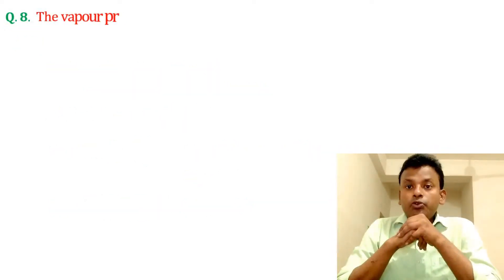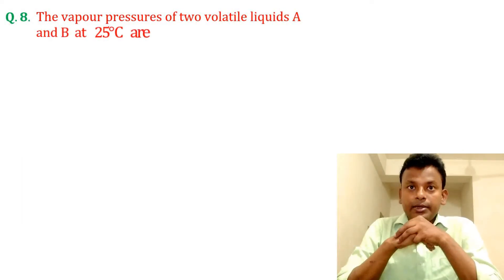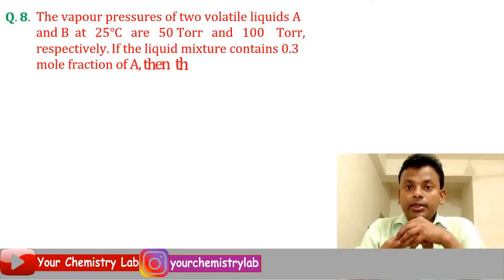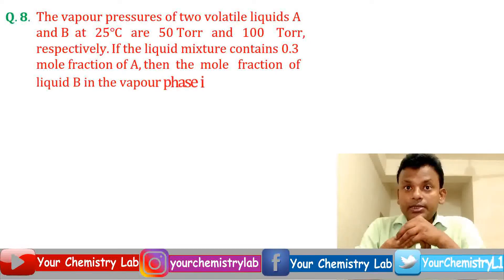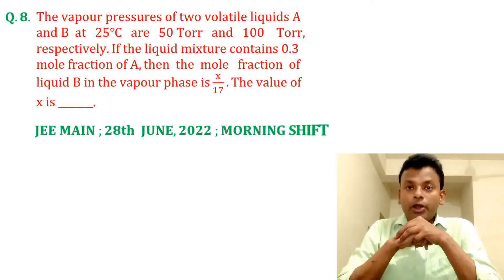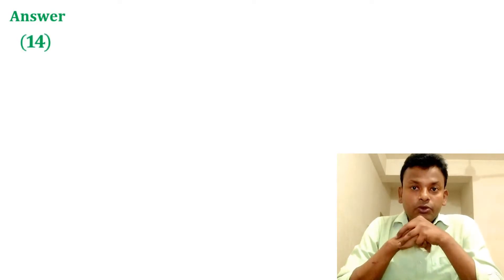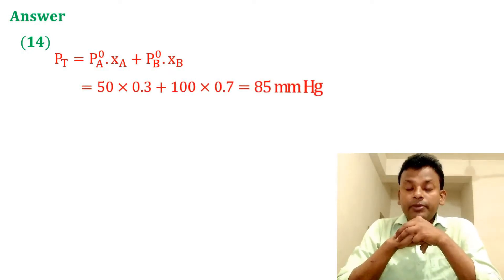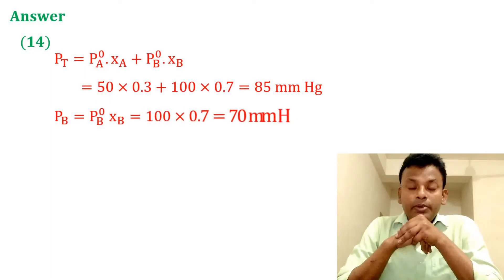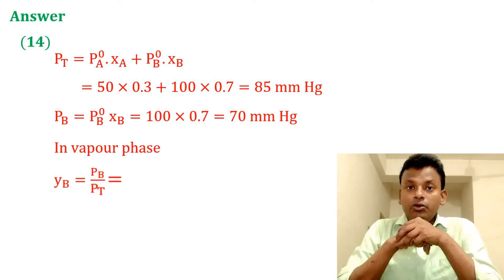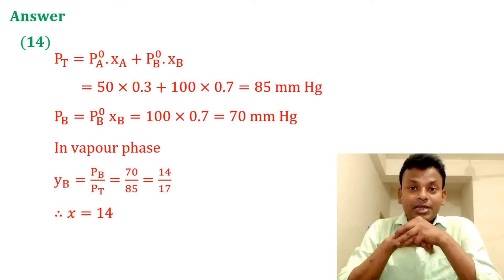Question 8: The vapor pressures of two volatile liquids A and B at 25 degrees Celsius are 50 torr and 100 torr respectively. If the liquid mixture contains 0.3 mole fraction of A, then the mole fraction of liquid B in the vapor phase is x/17. The value of x is dash. This question was set in JEE Main 28th June 2022 morning shift. Answer is 14. P_total = P⁰_A × x_A + P⁰_B × x_B = 85 mmHg. P_B = P⁰_B × x_B = 70 mmHg. In vapor phase, y_B = P_B/P_total = 70/85 = 14/17. So x = 14.